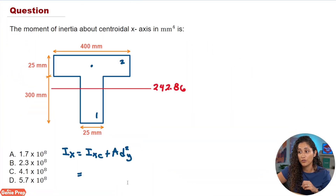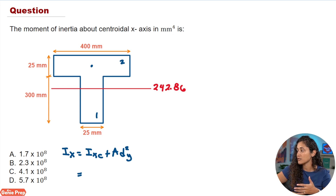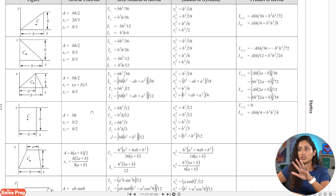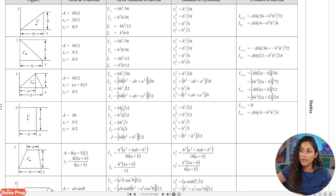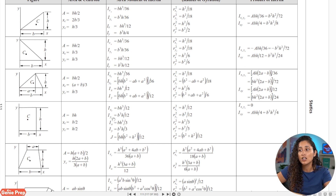Now let's find the moment of inertia. We use the parallel axis theorem equation. For shape one, which is a rectangle, we go to the reference handbook's statics table for moment of inertia equations. Since we're finding the moment of inertia about the centroidal x-axis, we use bh³ over 12. In future videos when we do the moment of inertia about the x-axis or a given axis, we'll see when to use Ix or Iy.